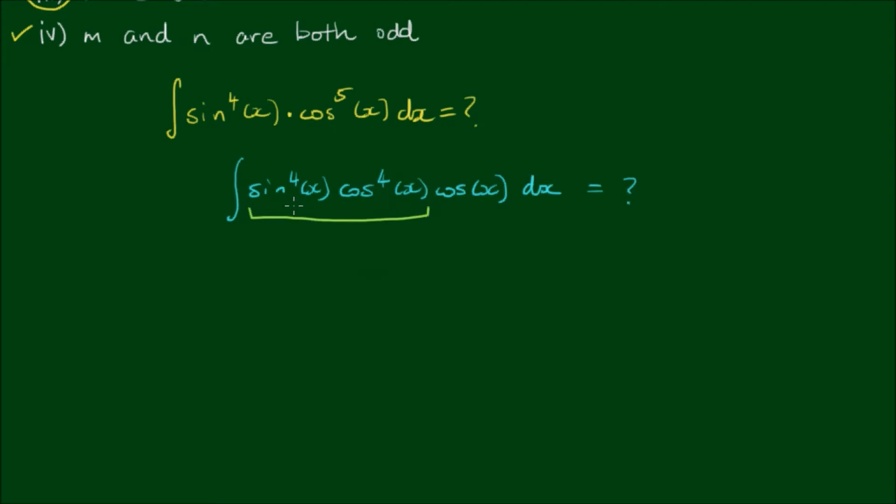Now, because the powers are the same, there's a couple of ways I can approach the product of sine to the 4th power by cosine to the 4th power. I can use a product of some formula. But I think for the sake of consistency with what we've done in the past, the most logical way to deal with this is to rewrite cosine to the 4th power as cosine squared of x all squared.